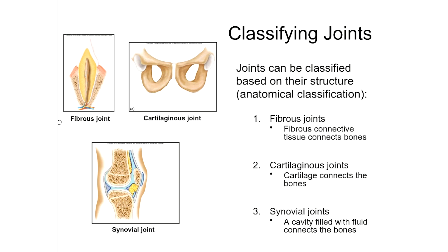Usually, because the fibers holding bones together in a fibrous joint are very short, fibrous joints tend to be immovable. However, there are a few examples of fibrous joints — one in the lower leg — where the fibers are a little longer, running between the bones and allowing a small amount of movement.